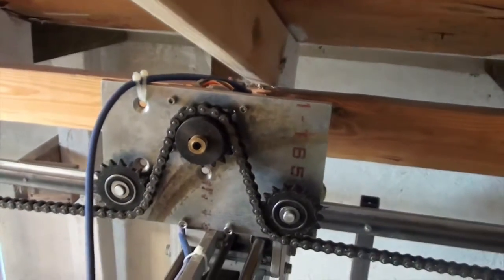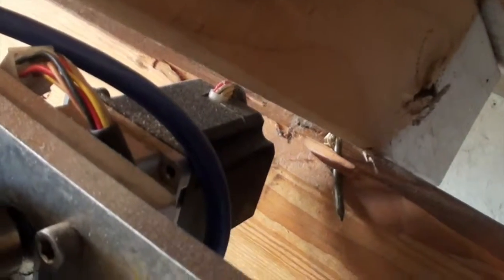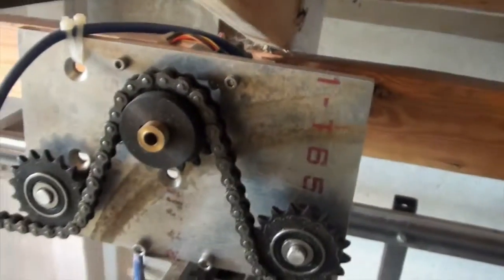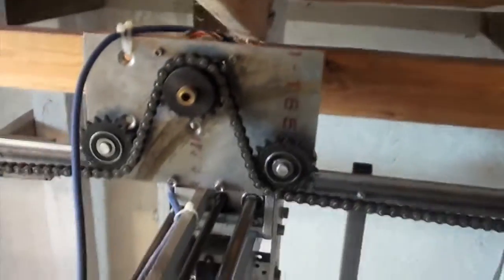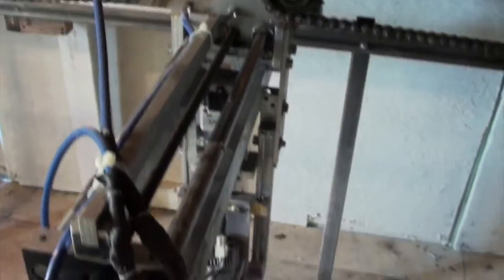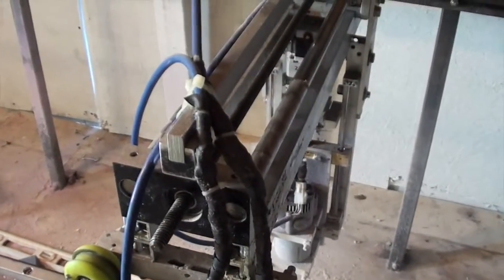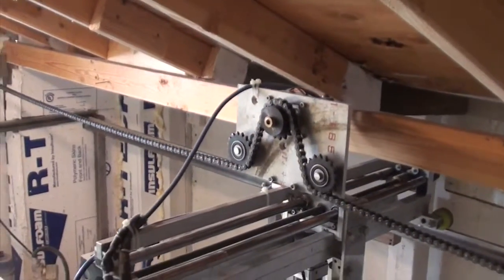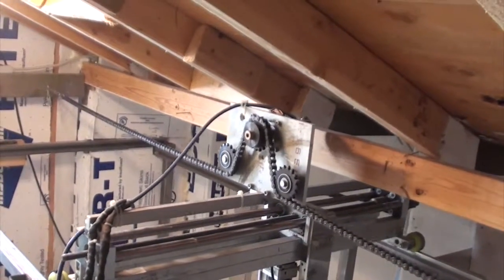The central sprocket is driven by a stepper motor, you can see it behind the plate. Rotation of that motor moves the entire Y axis along the chain, and that rides on the skateboard wheels on the aluminum track. Let me show you that in motion. Here you can see the entire Y axis being pulled along X by the chain.